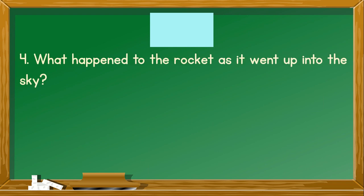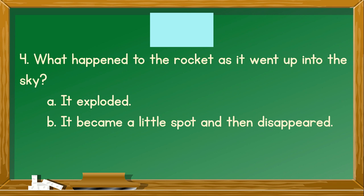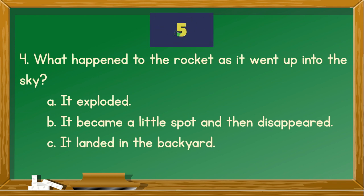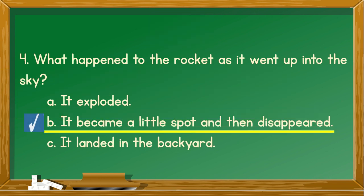Number 4. What happened to the rocket as it went up into the sky? A. It exploded. B. It became a little spot and then disappeared. C. It landed in the backyard. You're right. The correct answer is B. It became a little spot and then disappeared.